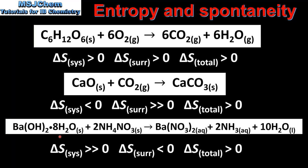Our final reaction is between barium hydroxide octahydrate and ammonium nitrate. Here, 3 moles of solid reactants form 13 moles of aqueous ions and molecules, representing a very large increase in the entropy of the system. Although the change in entropy of the surroundings is negative because this is an endothermic reaction, the total change in entropy is positive due to the large increase in entropy of the system.